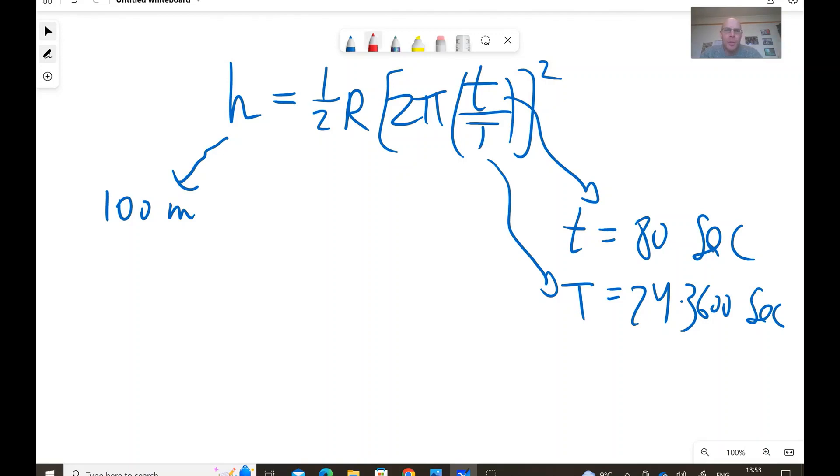So, 100 equals roughly r times 0.0000417. So, the estimate for the radius of Earth is 5,882 kilometer.